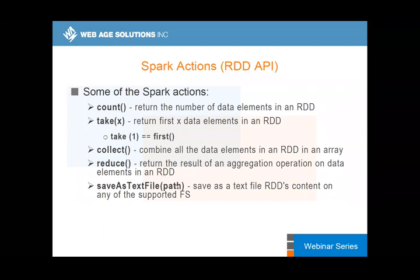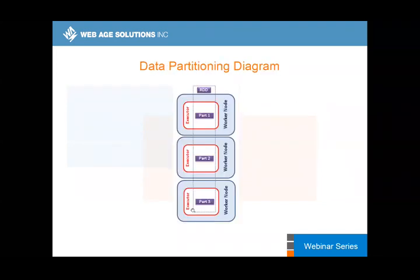We can save a text file in any of the supported file systems. In addition to being a polyglot resource manager, Spark can talk to different storage systems — native Hadoop HDFS, AWS S3, or OpenStack Swift object store. That's a hallmark of Spark, which allows you to pursue multi-cloud and multi-system strategies.